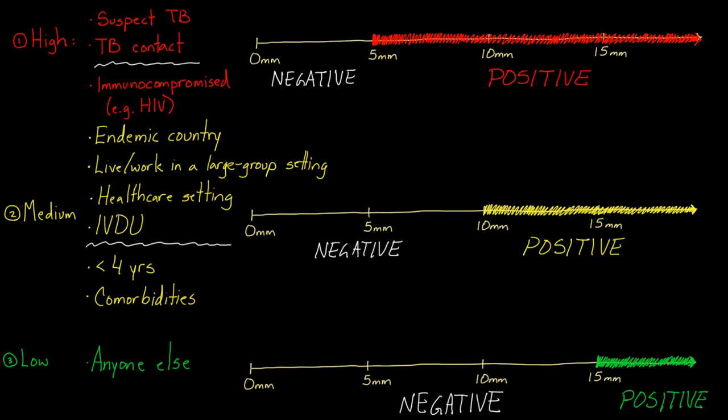A couple of questions people always ask: what if someone falls into two of these categories? What if they're, let's say, below four years old—a three-year-old—so they have this one, but you're also really worried that they have TB, so they're in this one. Well, if you ever have someone that falls into two categories, you have to go with the more conservative approach and say, if they meet the high-risk category, I'm going to use that one to decide if they're positive or negative. So in this case, a three-year-old who I suspect has TB, automatically I would have to go with this top one because I suspect TB. Simple as that.